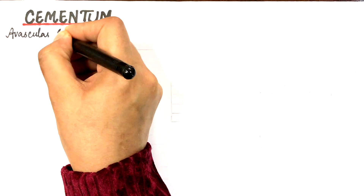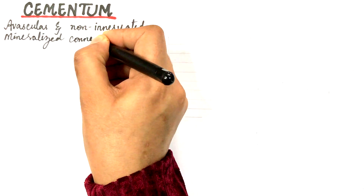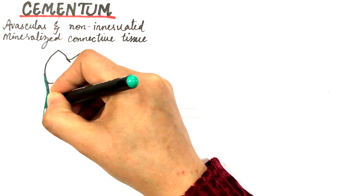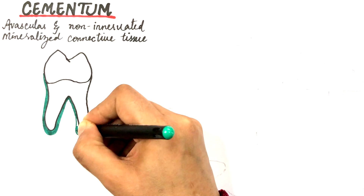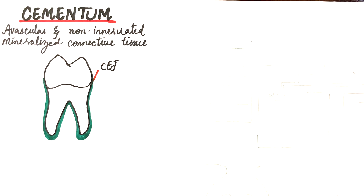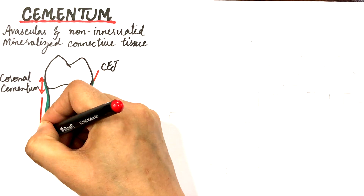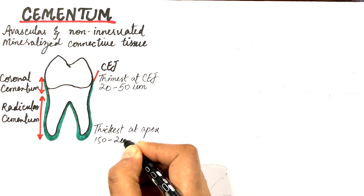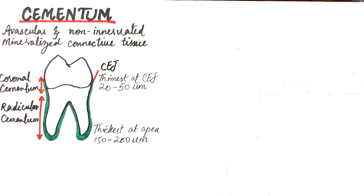Cementum is an avascular and non-innervated mineralized connective tissue. It surrounds the roots of teeth beginning at the cementoenamel junction or the CEJ and continues up to the apex of the tooth. The thickness of cementum varies in different teeth and in different regions of the same tooth. It is thinnest at the CEJ, at 20 to 50 micrometers, and thickest towards the apex at about 150 to 200 micrometers.